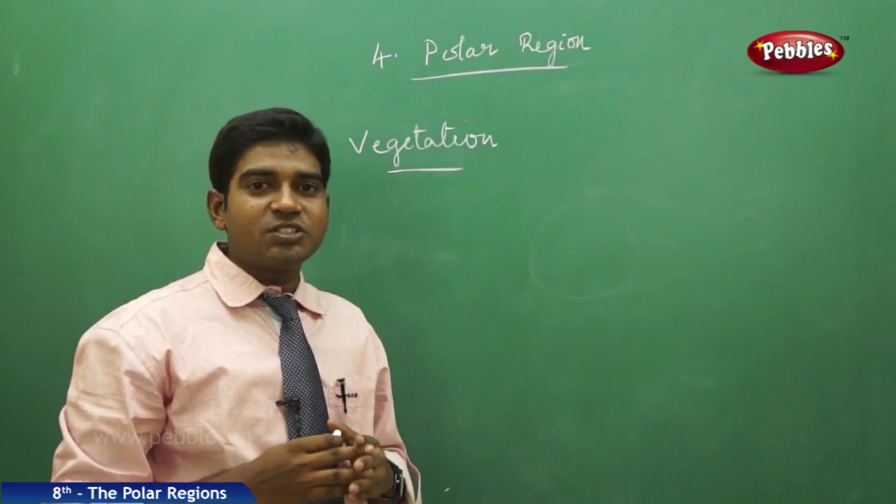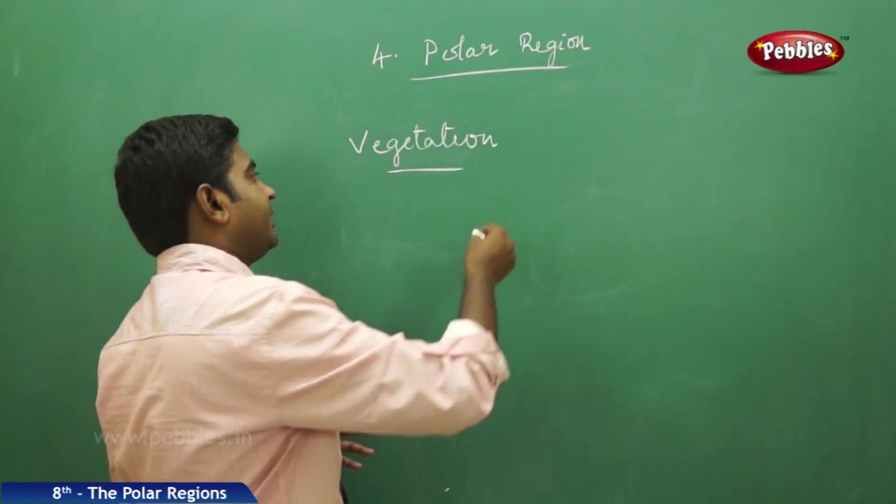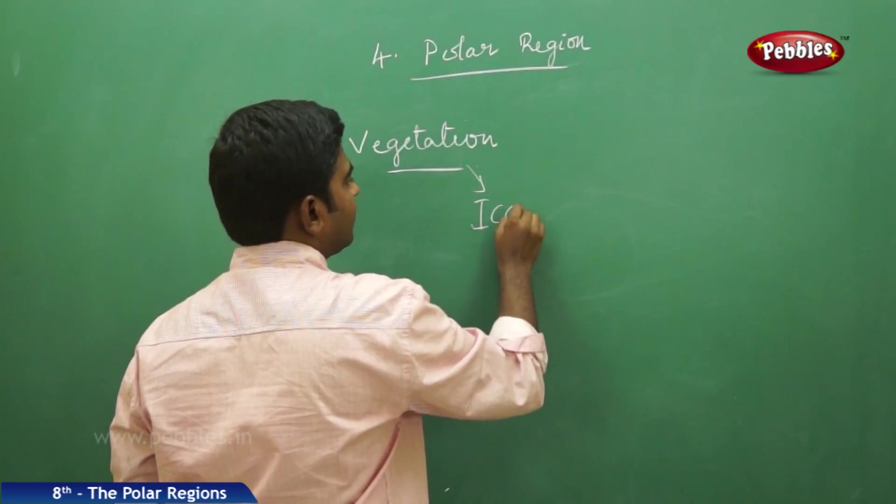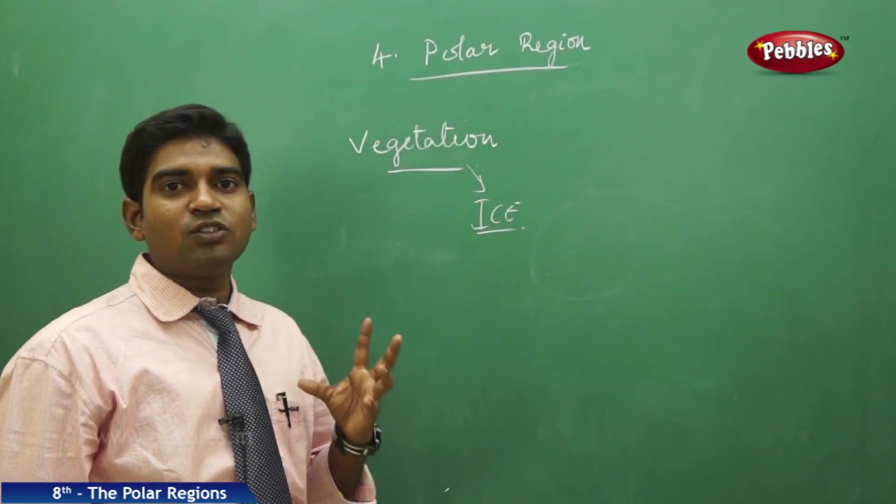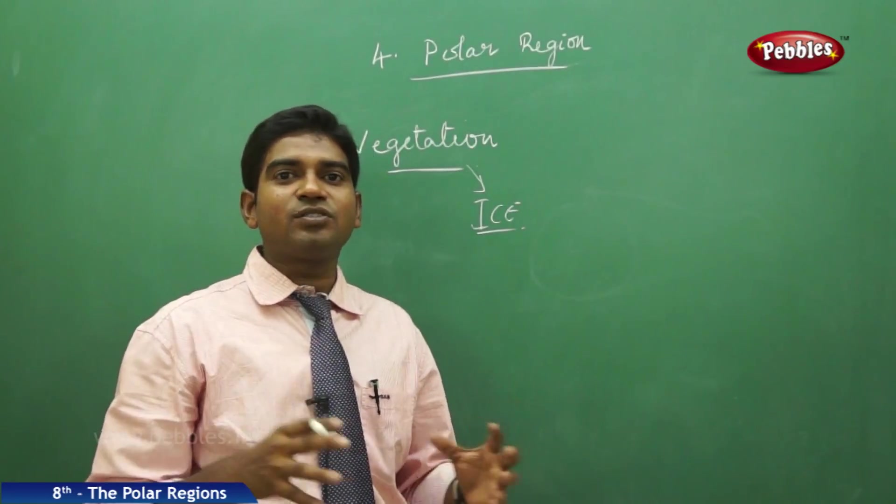In this vegetation of the Tundra region, we can't find very good vegetation because it is the region where ice dominates the land. The entire soil is covered with thick layers of ice.